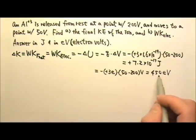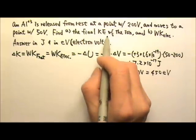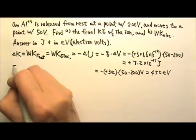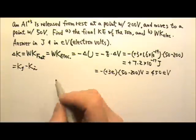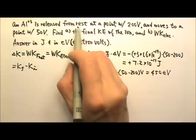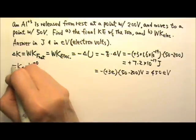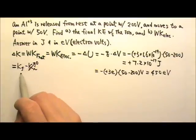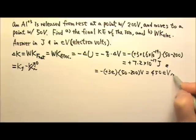This is also the change in kinetic energy. We want the final kinetic energy of the ion. Since the change in kinetic energy is the final minus the initial, and because the ion starts from rest, the initial kinetic energy is zero. That means the change in kinetic energy equals the final kinetic energy. So these two values are both the answers for part A and part B.